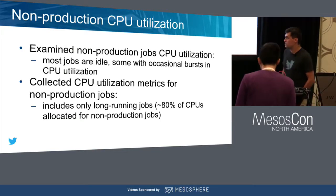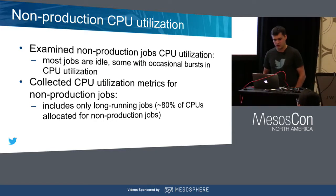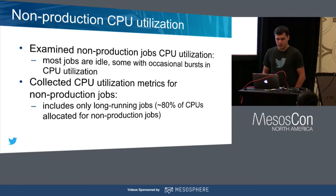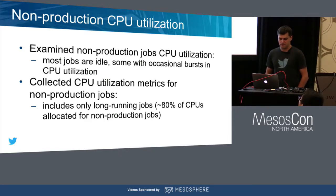The problem is that both non-production and production resource allocation is growing. In order to keep up with this growth, we either have to add new machines to the cluster or try to find other solutions like oversubscription. We also observed that many non-production jobs are actually idle — CPU utilization is really, really low, somewhere near zero. We collected statistics and found that many jobs are not using CPU, and some have occasional bursts, but almost none of those non-production jobs are fully utilized.